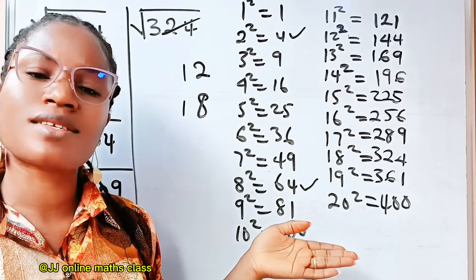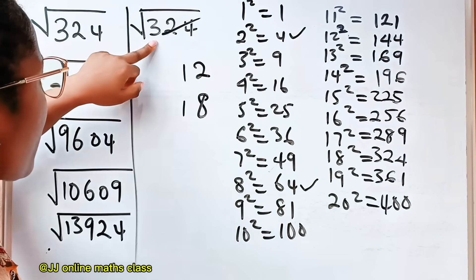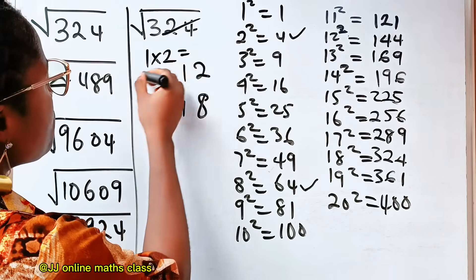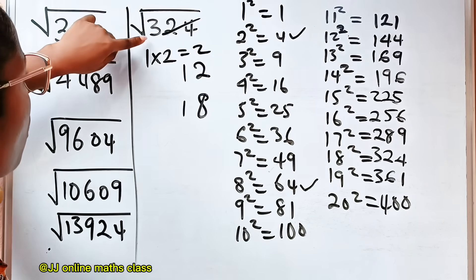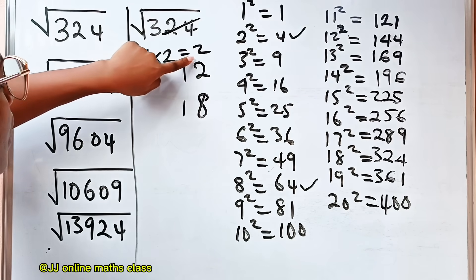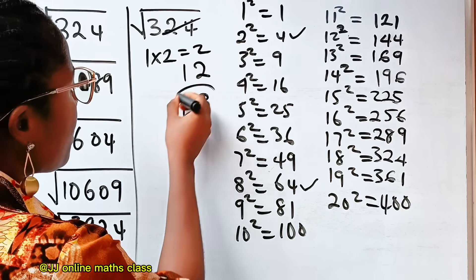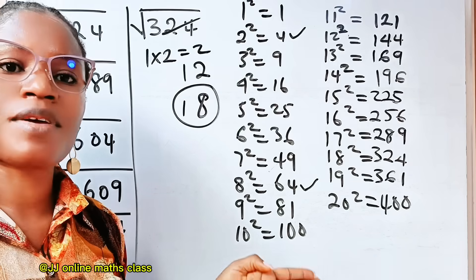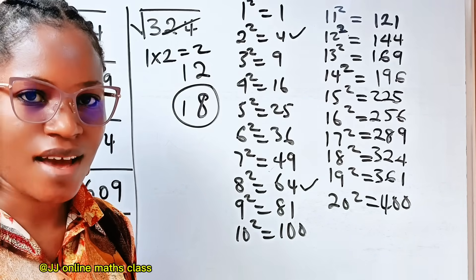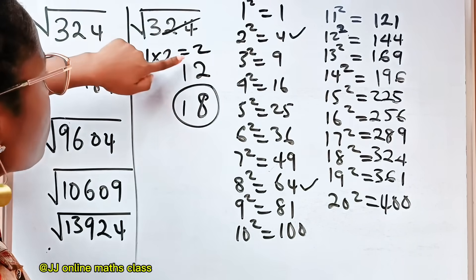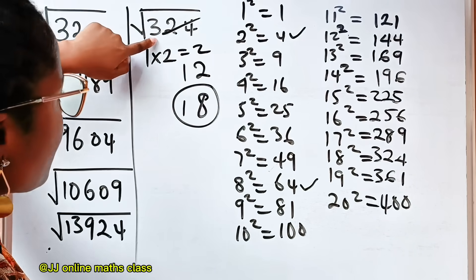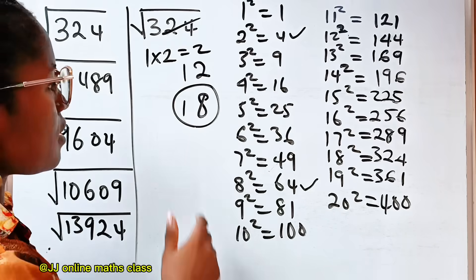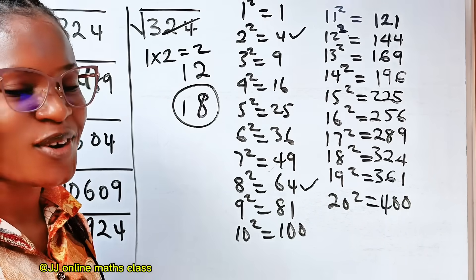How do we know if the answer is 12 or 18? We have 1, and after 1 we have 2, so multiply: 1 times 2 is 2. Compare 3 and 2 — since 3 is bigger than 2, we take the bigger number. That means the answer is 18. Square root of 324 is 18. You can press your calculator to verify.